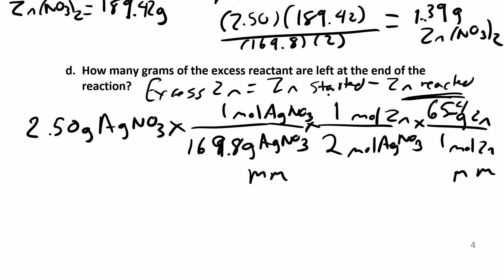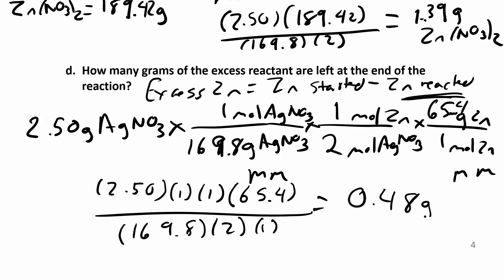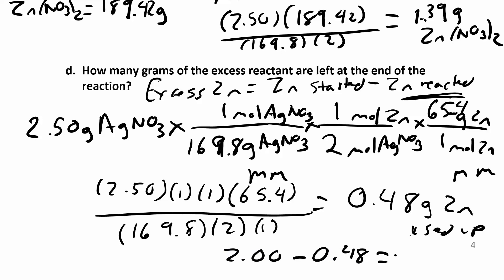So in the calculator: 2.5 times 1 times 65.4, divided by 169.8 times 2. When you work all that out, you get 0.48 grams of zinc — that's what gets used up, that's what reacted. If I started off with 2 grams and used up 0.48, at the end I have 1.52 grams left over. That's the answer — that's how much zinc I have in excess.